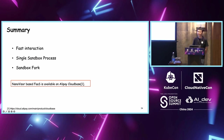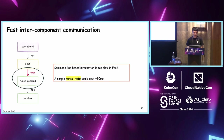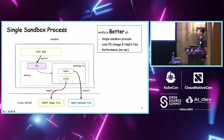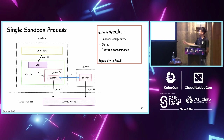Question about the single sandbox process optimization: as far as I know, GVisor separates file access from Sentry to a Gofer process for security reasons, because many attacks happen when the user app wants to visit some illegal file system. But you put it back into Sentry. So how do you prevent this illegal access?